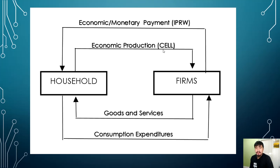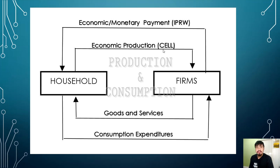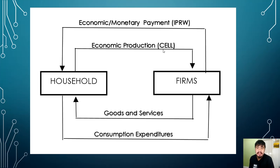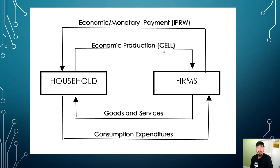Now, talking about raw materials — these raw materials are not yet generated for consumption. There are two things we must remember in economics: production and consumption. Production is the start and consumption is the end. The household does not have the capability to convert those raw materials into something consumable. The sector that would convert those raw materials would now be your firms.